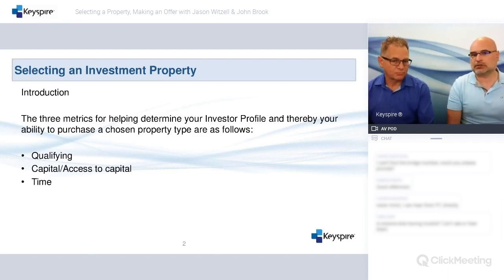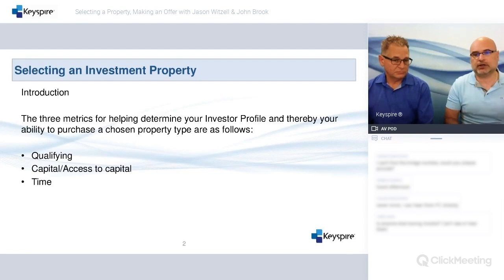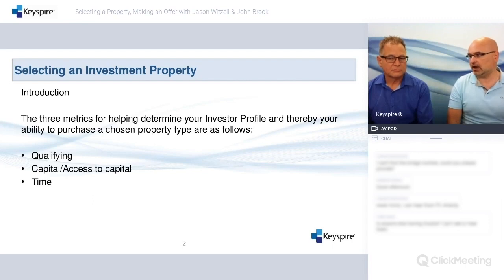Approaching a mortgage broker is the first step — finding out how much you can qualify for. You still want to know where you stand to know what your options are. Qualifying for the property, you might be able to qualify for up to six hundred thousand. But that doesn't mean you can't get into a property with five or more units where the rents would qualify the property.